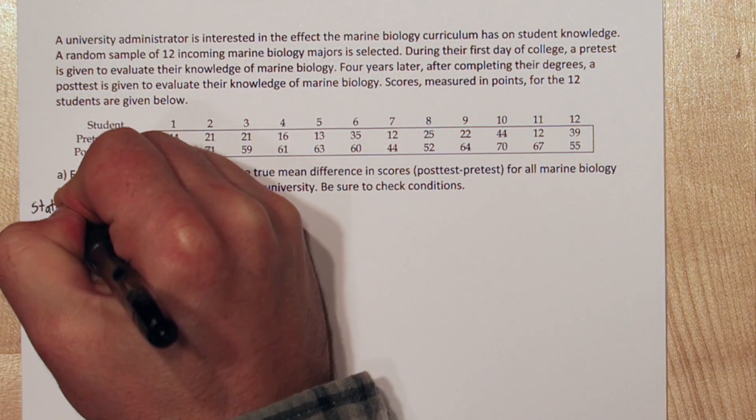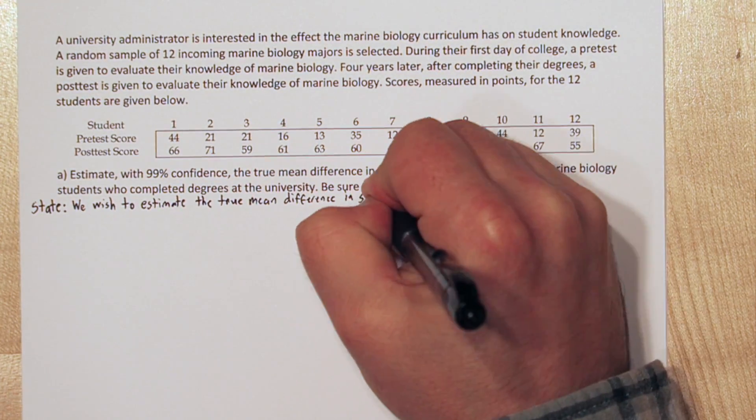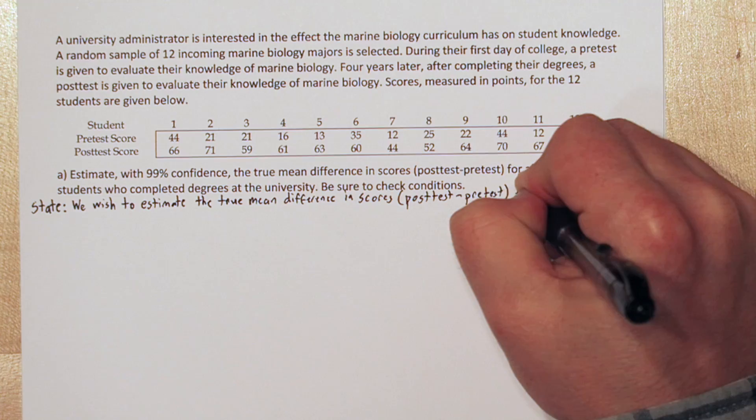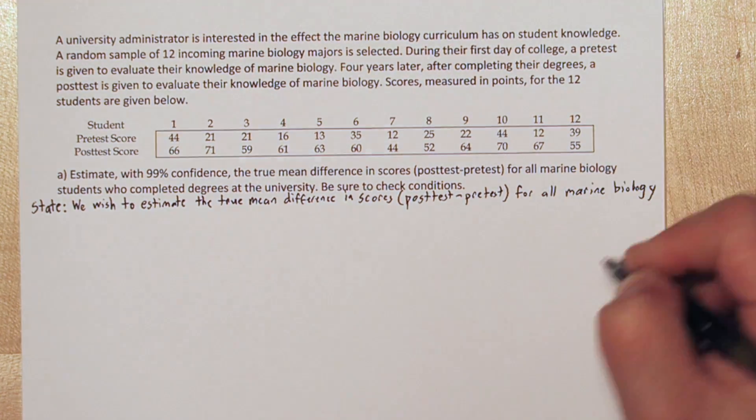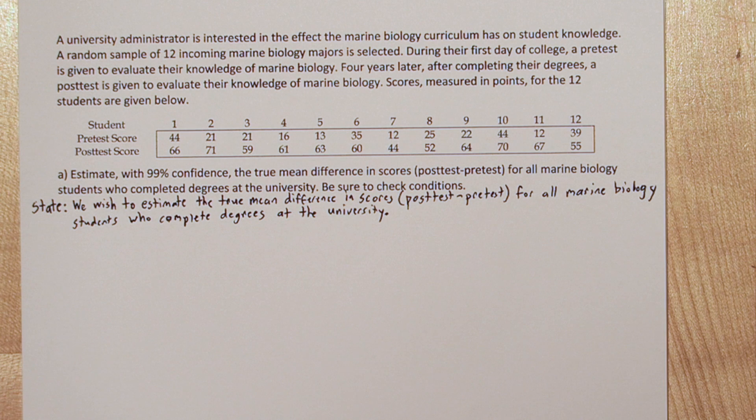Let's use the four step process. So state, we wish to estimate the true mean difference in scores, which is posttest minus pretest, for all marine biology students who complete degrees at the university. So the state step needs both our parameter of interest, which is the true mean difference in scores, and our confidence level, which I almost forgot. We want to be 99% confident in this interval.